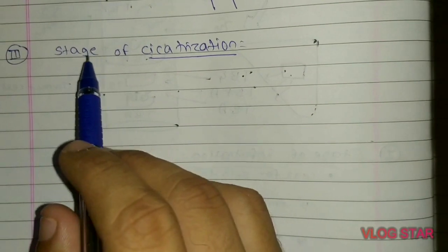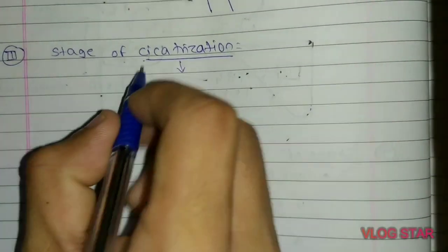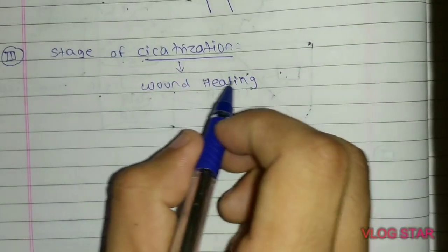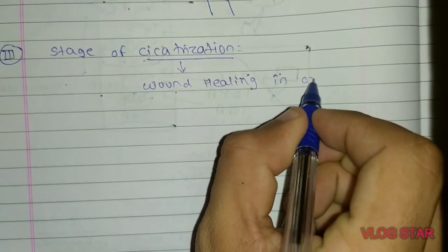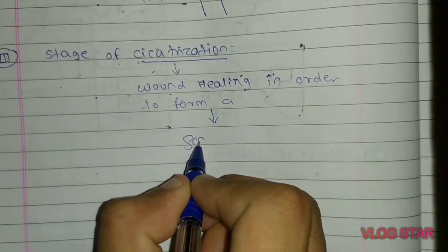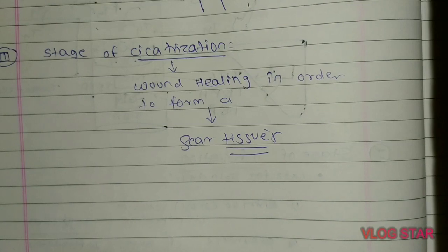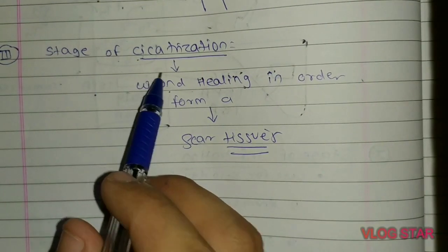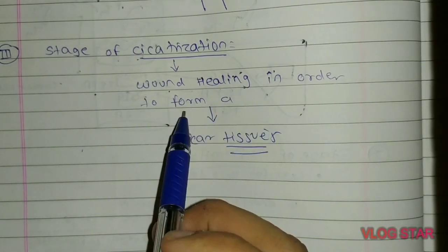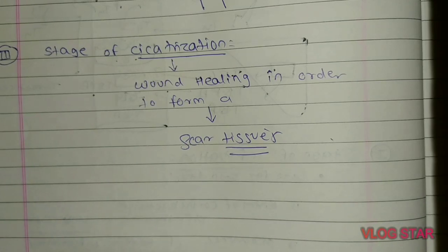The third stage is the stage of cicatrization, which means wound healing in order to form a scar tissue. The whole healing process of the palpebral conjunctiva happens in this stage of cicatrization.